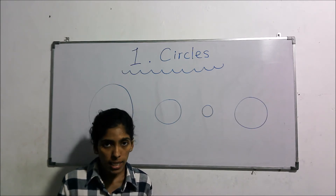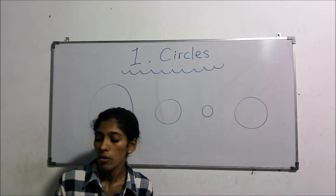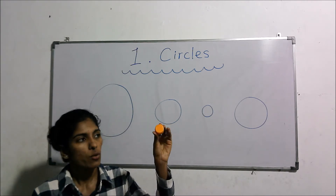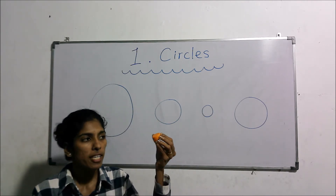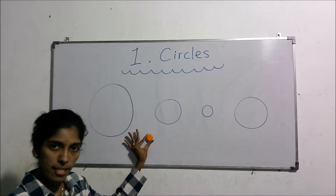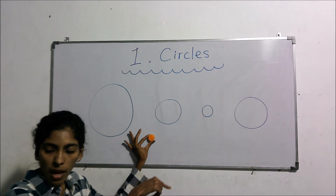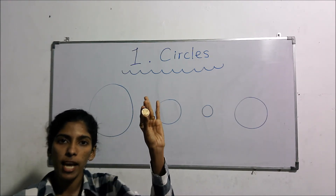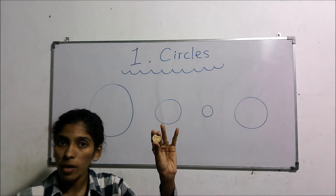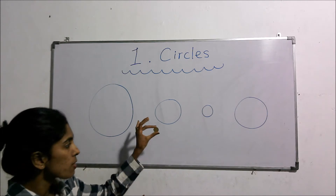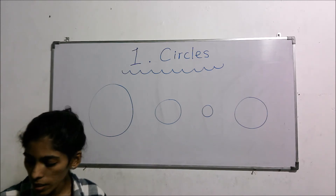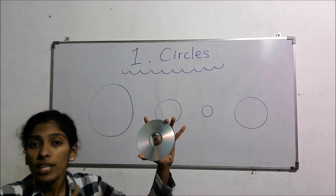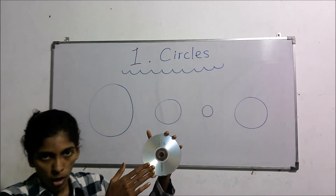There are so many objects and items with circular shapes. For example, here I have taken a lid of a bottle — this lid has a circular shape. By keeping this on a flat surface we can draw a circle. When we consider a coin — a 5 rupee coin — it has a circular shape, and I can draw a circle by keeping it on a paper. And a CD also has a circular shape, and we can draw a circle with the help of this CD.